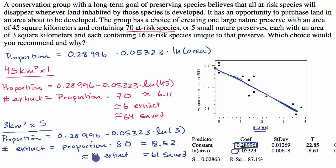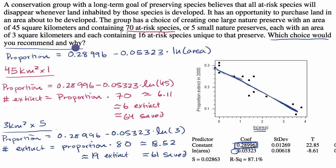Even using 18.5 and 61.5, on either measure the large 45 square kilometer island is better — you're going to have fewer species extinct and more saved. So which choice would you recommend and why? I'd recommend the one large island because, based on this linear regression, you would expect to save more species and fewer would go extinct.